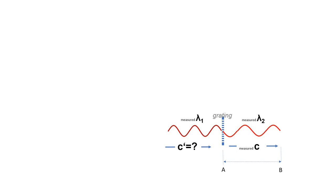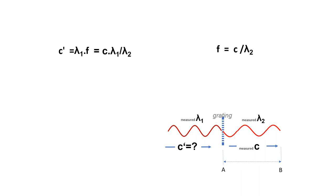In addition, we can measure the wavelength of light after the diffraction grating. At the exit of light from the diffraction grating, the wavelength of the light is known, as well as its speed. Based on this, we can calculate the light frequency. The known frequency of light and the measured wavelength of light with which it arrives from a moving light source enables the calculation of the speed of light from a moving light source.